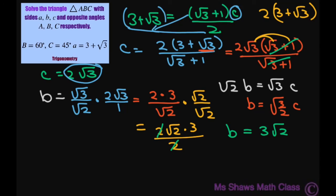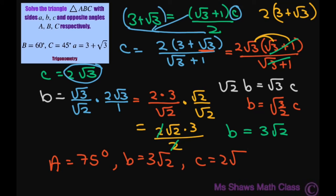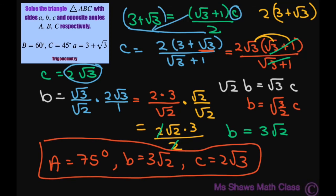So our missing information was: A equals 75 degrees, b equals 3 times square root of 2, and c equals 2 times square root of 3. And that's it — thank you, have a nice day!